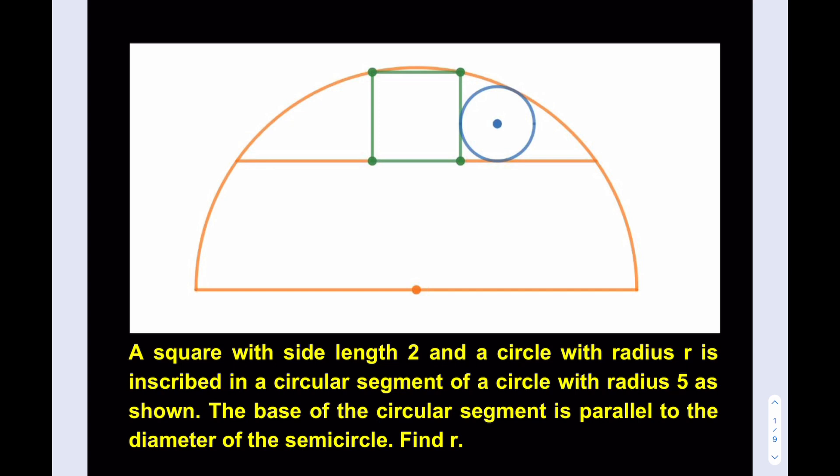So we do have a semicircle and then a circular segment is basically drawn, and then in that region we inscribe a square and a circle. So we're supposed to find the radius of the blue circle. At this point if you want, pause the video or continue to watch. All right, let's get started.